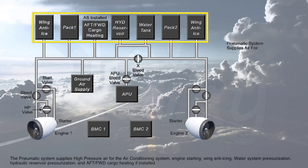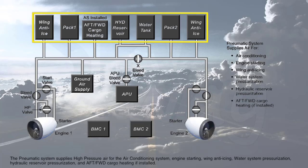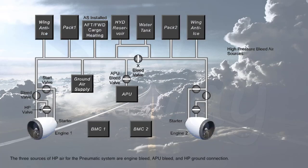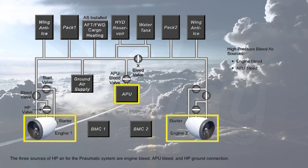The pneumatic system supplies high-pressure air for the air conditioning system, engine starting, wing anti-icing, water system pressurization, hydraulic reservoir pressurization, and aft-forward cargo heating if installed. The three sources of high-pressure air for the pneumatic system are engine bleed, EPU bleed, and high-pressure ground connection.